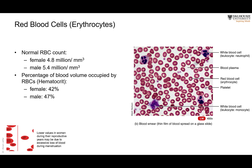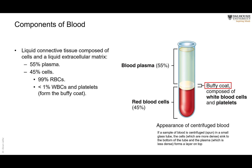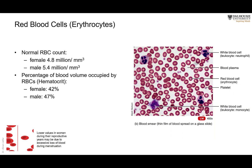This difference is also reflected in the percentage of blood volume occupied by RBCs. Overall it is about 45%, but broken down by sex: in males it is 47% and in females it is 42%. This percentage of blood volume occupied by RBCs is called the hematocrit.